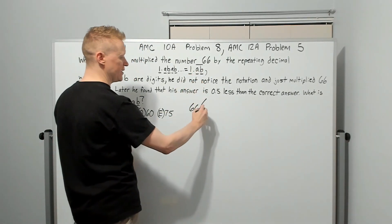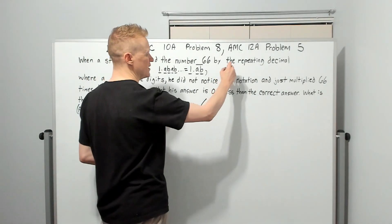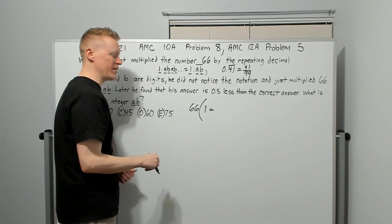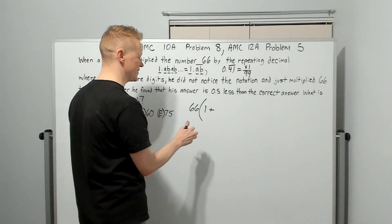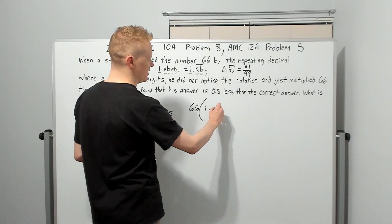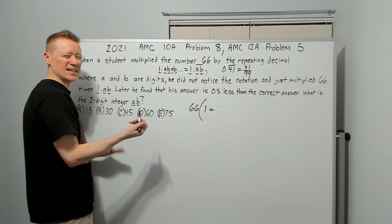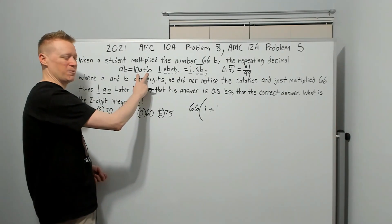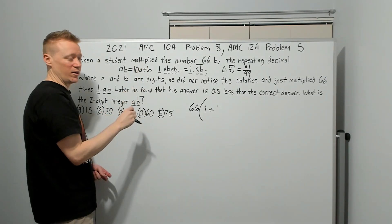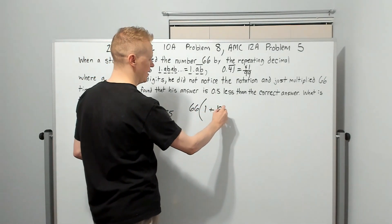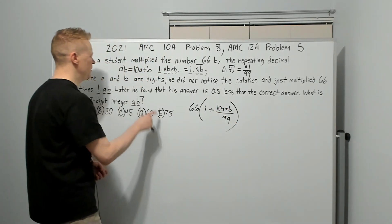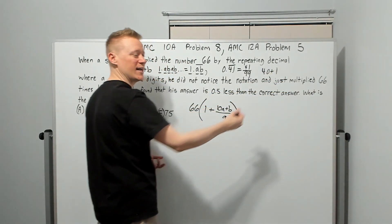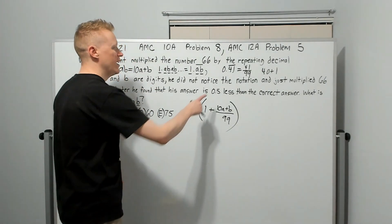He was supposed to do 66 times 1 plus the repeated decimal. And one of the things that we learned is that, for example, if you have 0.41 repeating, it's just 41 over 99. So 1 plus, and it would be AB, but you don't want to write AB over 99 because it looks like A times B. Instead, we're going to need to use the expanded form, which is 10A plus B. This is 10A plus B over 99. To understand this, think about the 41. How would you write 41? It would be 40 plus 1, which is 10 times 4 plus 1. That's why it's 10 times the first digit plus the second.